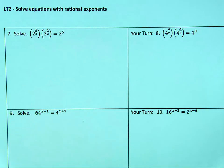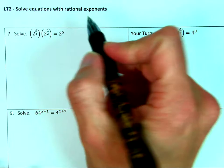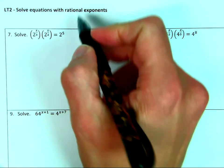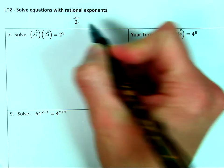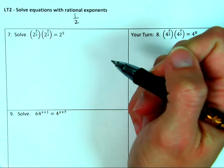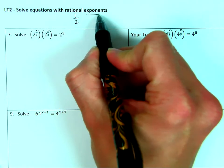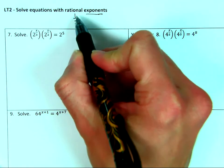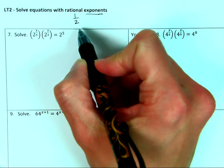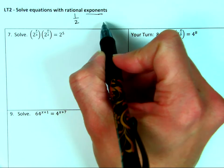Today we're going to solve some equations with rational exponents. Remember, rational is just a ratio, so it's a fraction — one half is a ratio, five thirds is a ratio. So the exponents are going to be fractions. That's basically what rational exponents means.